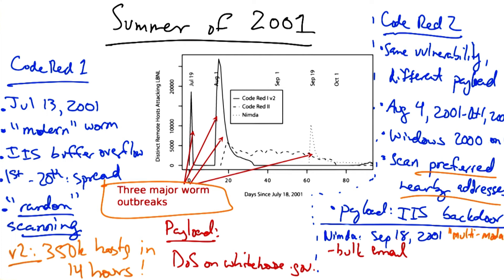It could spread by bulk email as an attachment. It copied itself across open network shares. It installed exploit code on web pages on the corresponding web server running on the machine so that any browser that visited the web page for that server would become infected itself. And it would scan for the Code Red 2 back doors that that worm had installed.